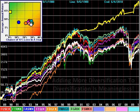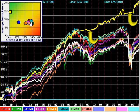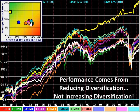Adding more diversified things to something that is already diversified is meaningless. The only improvement of significance occurred when Sector Surfer dumped diversification entirely in favor of a narrow asset class, in this case, money market. Said in a different way, performance comes from reducing diversification, not increasing diversification.